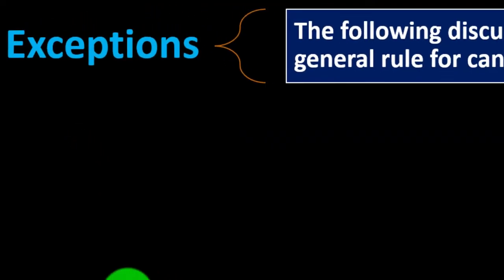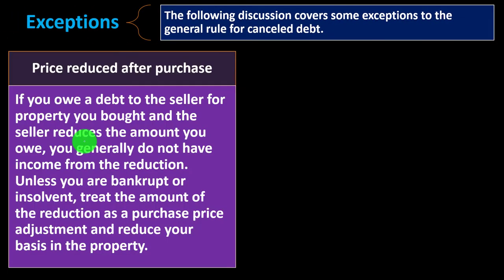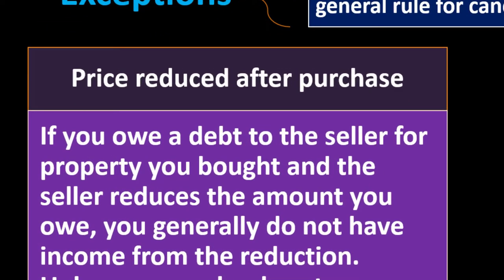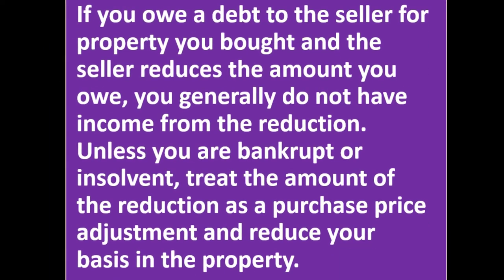Exceptions: the following covers some exceptions to the general rule for canceled debt. First, price reduced after purchase — if you owe a debt to the seller for property you bought and the seller reduces the amount you owe, you generally do not have income from the reduction, unless you are bankrupt or insolvent. Treat the amount of the reduction as a purchase price adjustment and reduce your basis in the property.